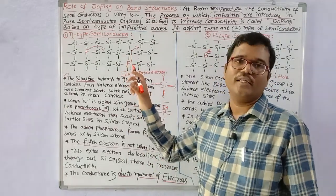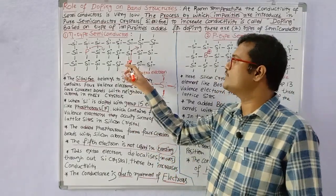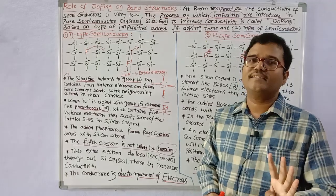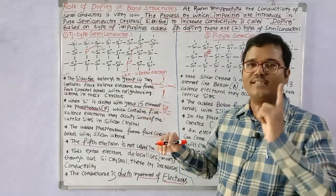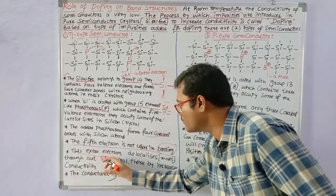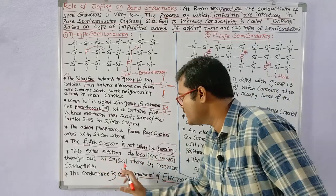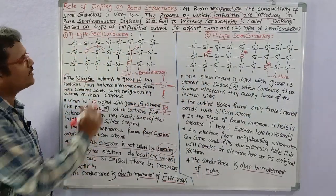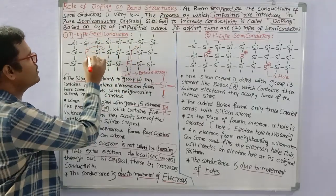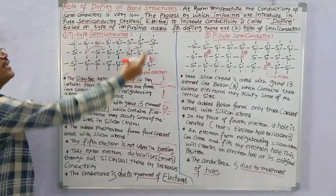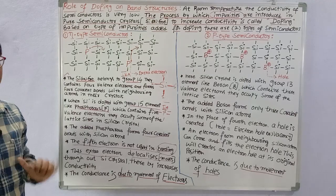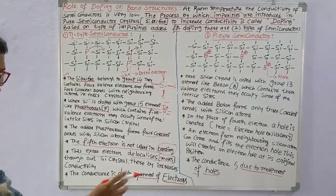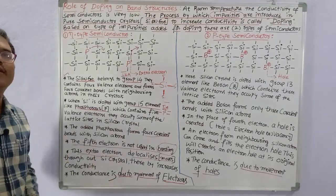The remaining one electron is not involved in chemical bonding. This extra electron delocalizes — that means it moves throughout the silicon crystal — thereby increasing conductance. The increased electron mobility increases conductance throughout the silicon semiconducting crystal.